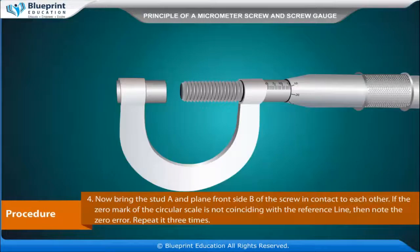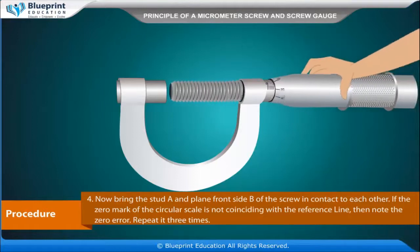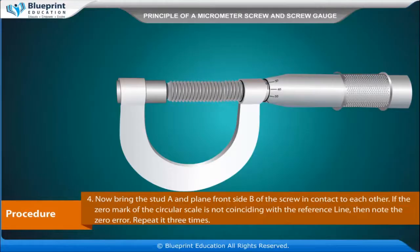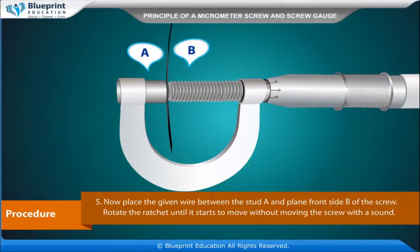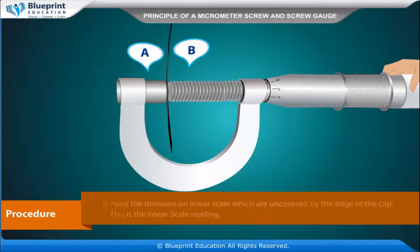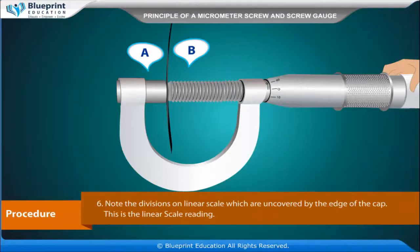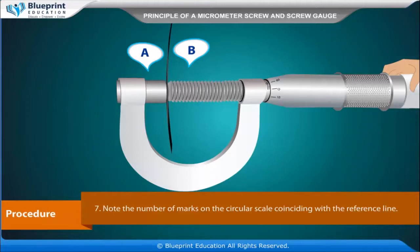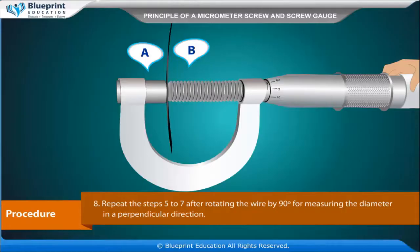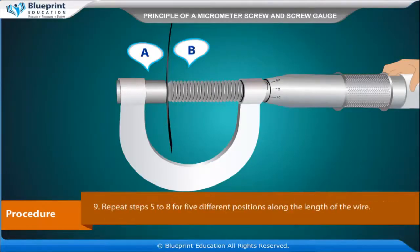Bring the stud A and plain front side B of the screw in contact with each other. If the zero mark of the circular scale is not coinciding with the reference line, then note the zero error. Repeat it three times. Now place the given wire between stud A and plain front side B of the screw. Rotate the ratchet until it starts to move without moving the screw with a sound. Note the divisions on the linear scale which are uncovered by the edge of the cap — this is the linear scale reading. Note the number of marks on the circular scale coinciding with the reference line. Repeat steps 5 to 7 after rotating the wire by 90 degrees for measuring the diameter in a perpendicular direction. Repeat steps 5 to 8 for 5 different positions along the length of the wire.